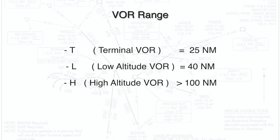The L — low altitude VOR — with a range of 40 nautical miles. And the H — high altitude VOR — with a range of slightly over 100 nautical miles. It is used for Victor airways and high altitude en-route navigation.